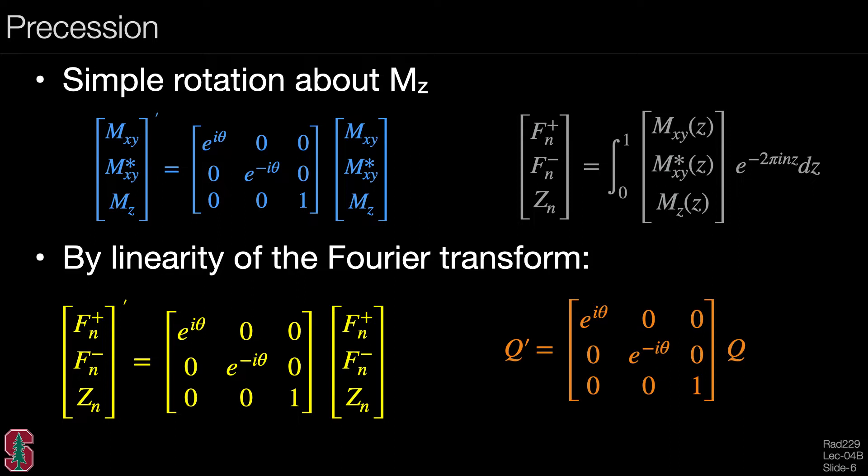Because the rotation matrix applies on the columns separately, we can apply the same rotation matrix to an entire Q matrix, that is, for different orders n simultaneously.